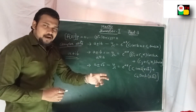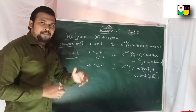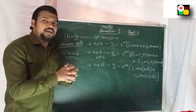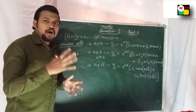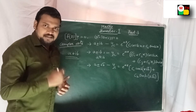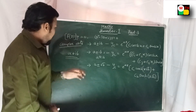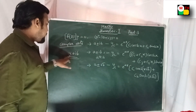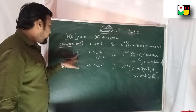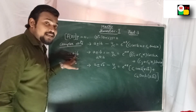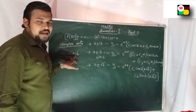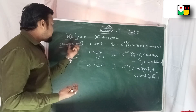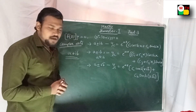A complex number has a real part and an imaginary part. The form is A plus iB, where A is the real part and iB is the imaginary part. i is imaginary. So this is a complex number.